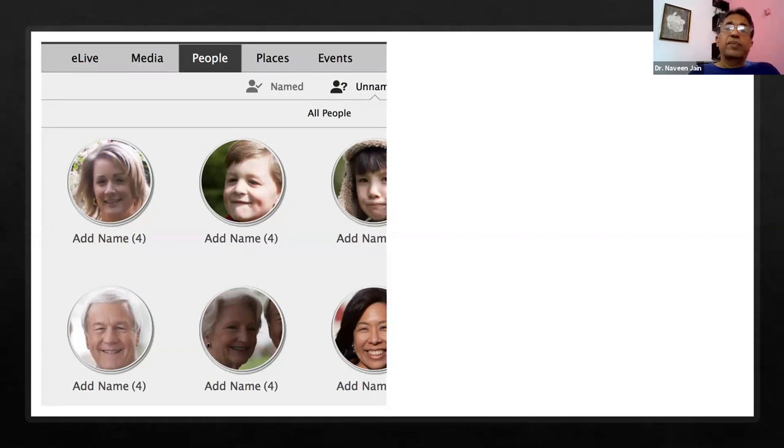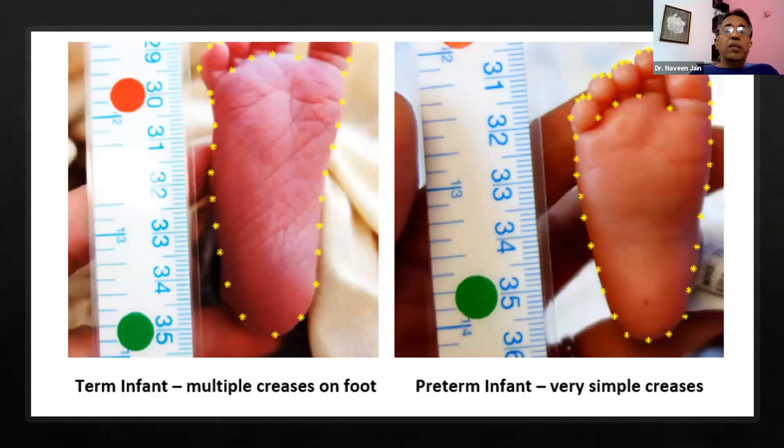In medical practice, instead of doing gestation assessment in a subjective manner, it can be done objectively. You can just show the foot of the baby to the computer, and it can find out whether there are multiple creases on the foot or simple creases, and how much of it is occupied by these creases. It can assess the gestation. The advantage is that somebody not trained like a nurse or health worker can use this tool, and there's limited subjectivity.